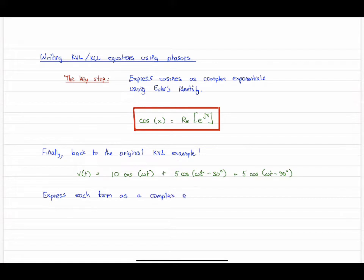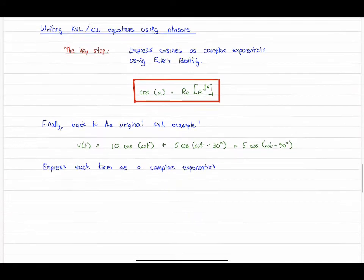Our starting point here is express each term as one of these complex exponentials. V1, this is what it is in time domain, this is what it will be in the phasor domain. Likewise for V2, and finally for V3.